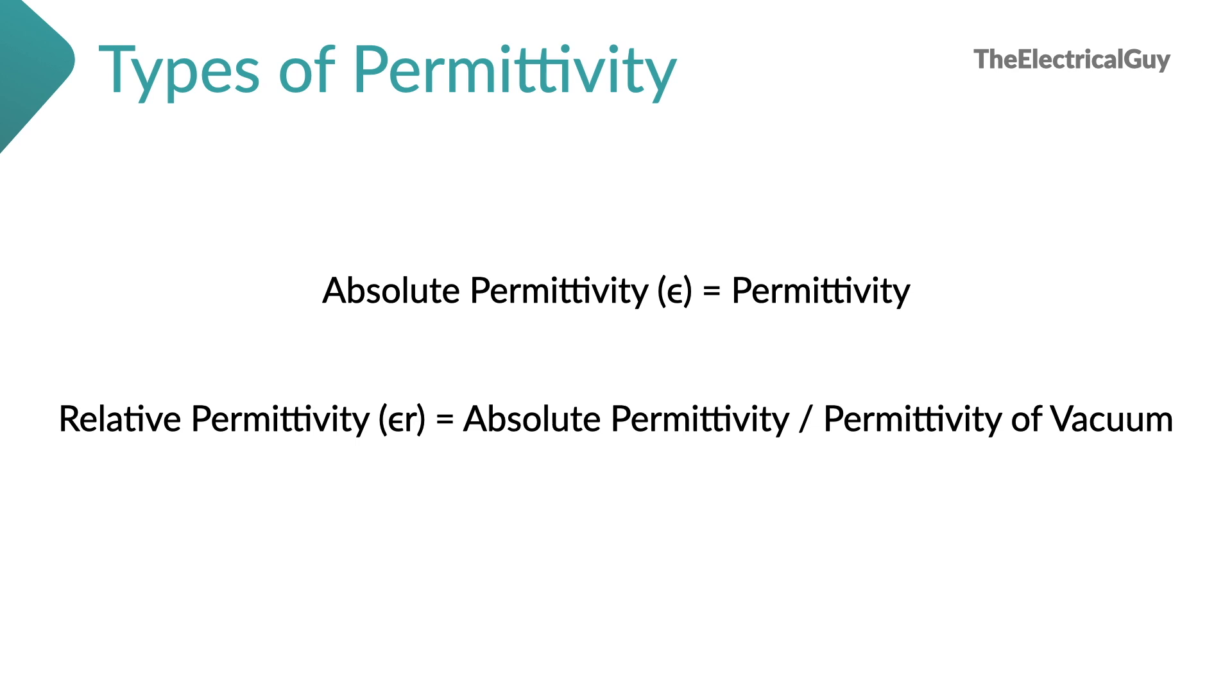Relative permittivity is nothing but the ratio of absolute permittivity and permittivity of vacuum or permittivity of free space. Generally vacuum's permittivity we refer as constant.